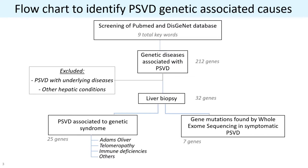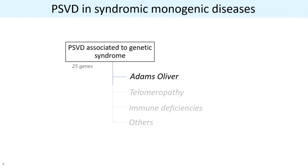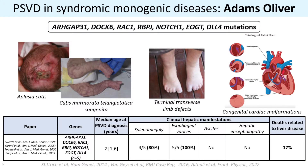In the first group, PSVD is associated with genetic syndromes, and on the other hand we have rare gene mutations found by whole exome sequencing in patients with symptomatic PSVD. I will start by describing the PSVD manifestation in syndromic monogenic disease, starting with Adams-Oliver syndrome. This is a rare inherited disorder present at birth, and nowadays there are seven genes identified in the development of Adams-Oliver.